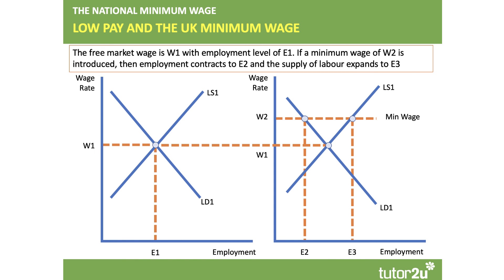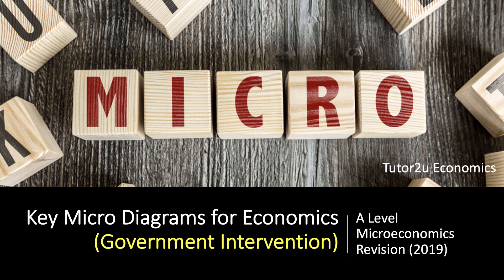We'll talk about minimum wages when we do a labour market diagram session, which I think is going to be video six. This is video three, but just to show a minimum price here in the labour market: on the left-hand side, the labour market without a minimum wage has a wage of W1. A minimum wage has to be set above the going rate for it to have any impact on the market. Government intervention provides loads of opportunities for good diagrams, which can really help tell a story — develop those diagrams, use them as the concrete base for terrific analysis, and then some even better evaluation.